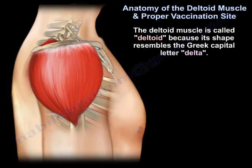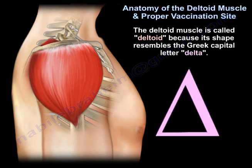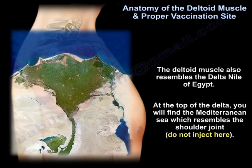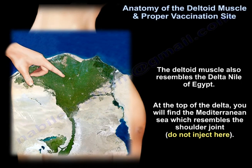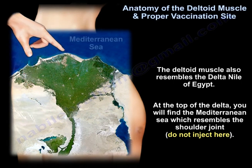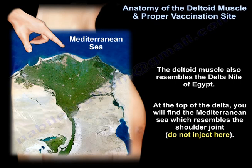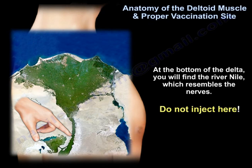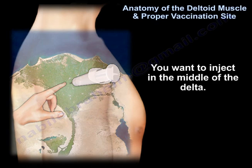The deltoid muscle is called deltoid because it resembles the Greek capital letter Delta. It also resembles the Nile Delta of Egypt. At the top of the Delta you will find the Mediterranean Sea, which resembles the shoulder joint — you do not want to inject there. At the bottom of the Delta you will find the river Nile, which resembles the nerves — you do not want to inject there either. You want to inject in the middle of the Delta.